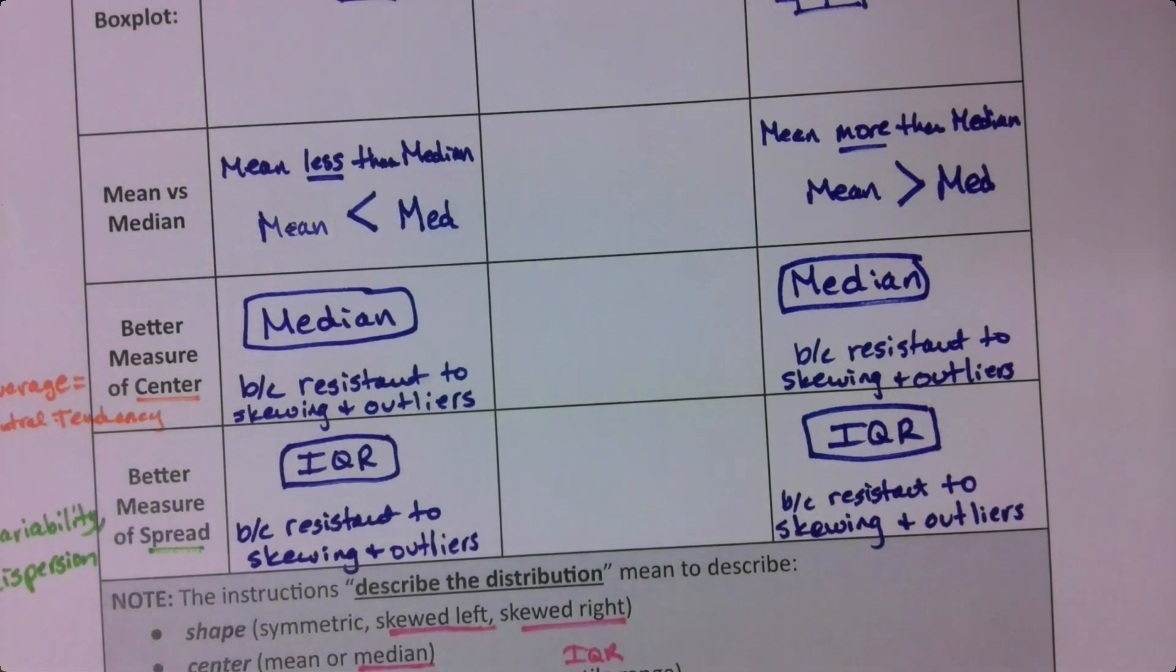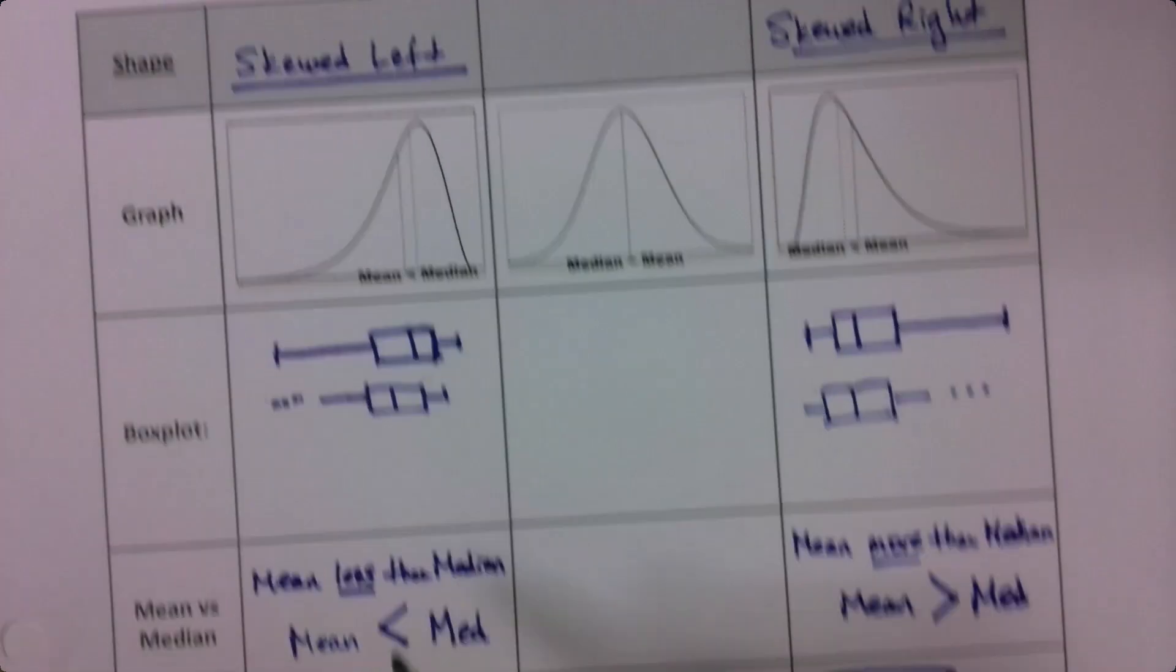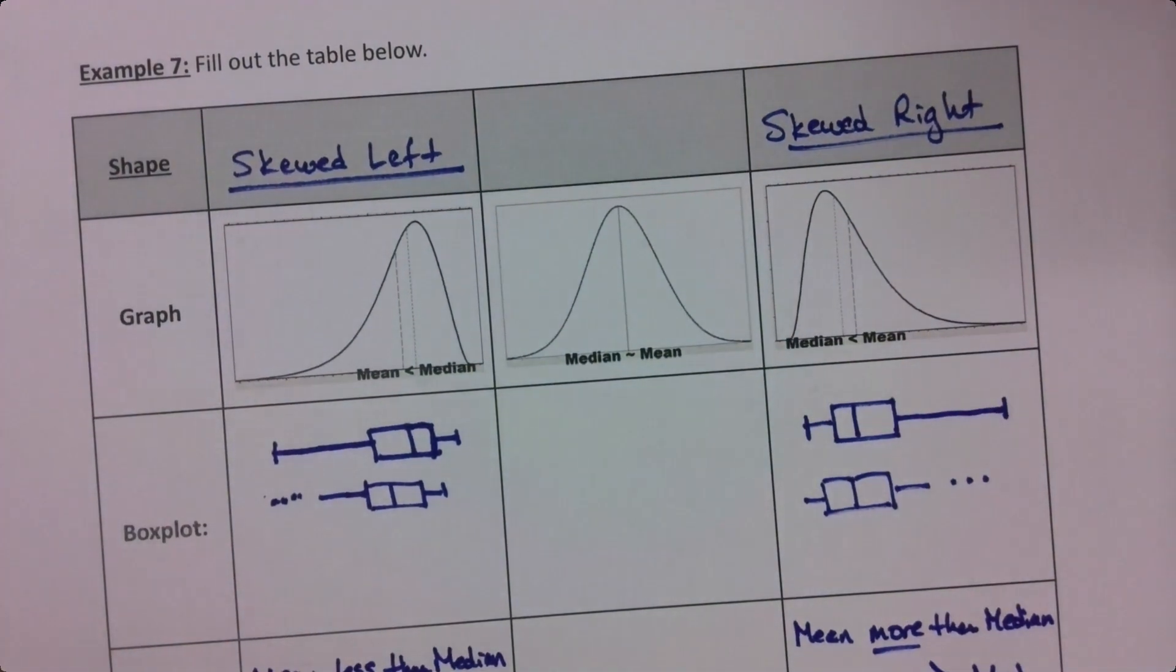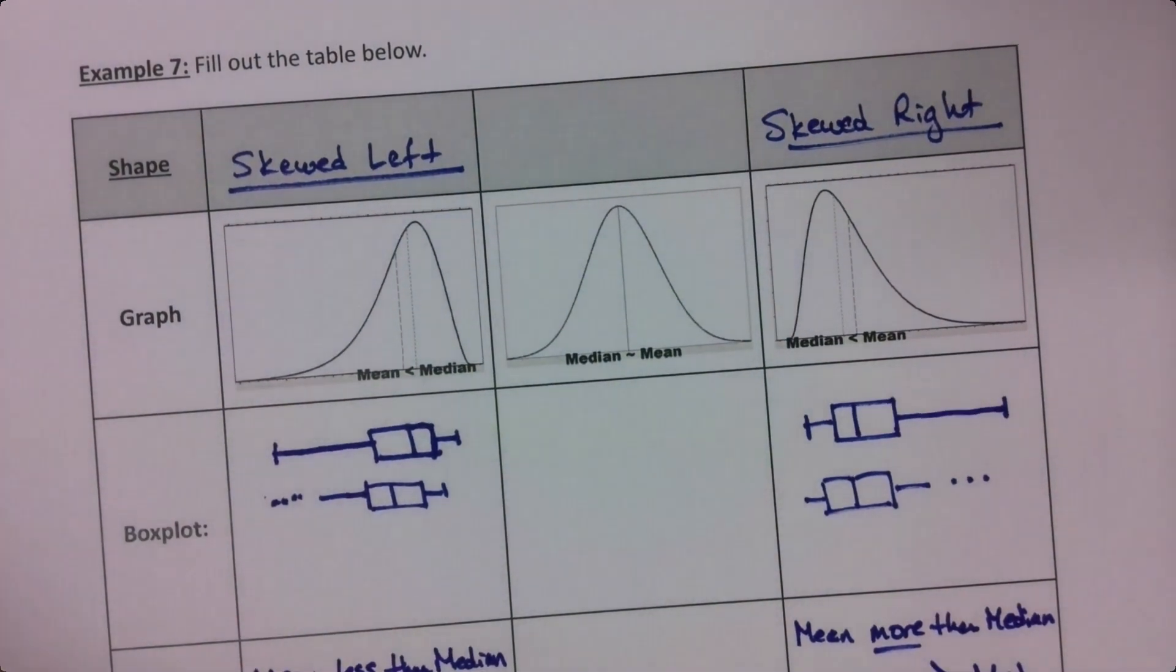Now, I say all of that, but I will say we hit a point in this course that we almost never use the median and the IQR. So what does that mean? Well, after chapter seven, pretty much every data set we work with is going to be symmetric.